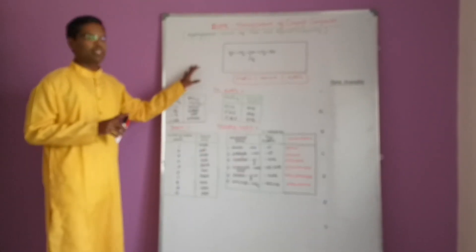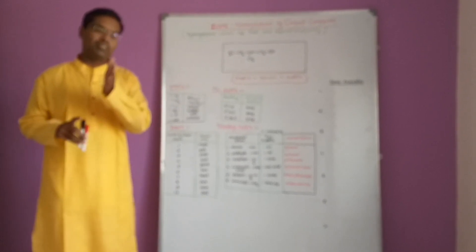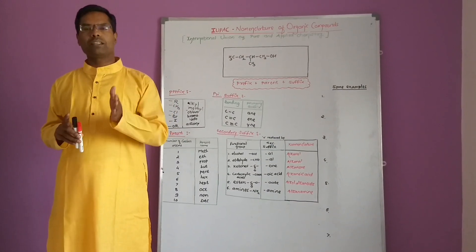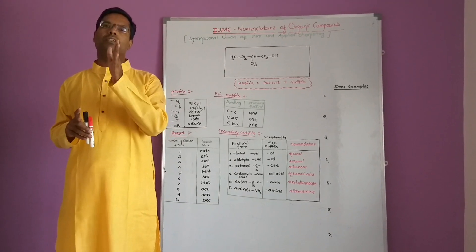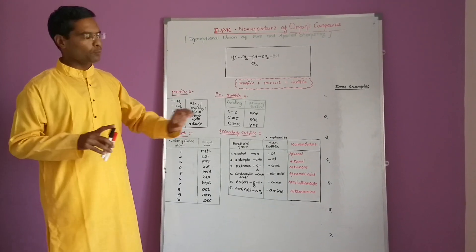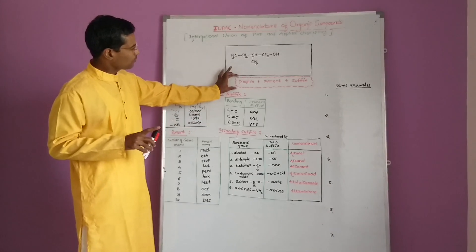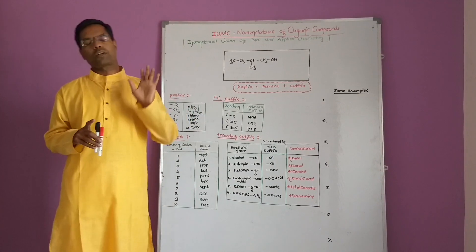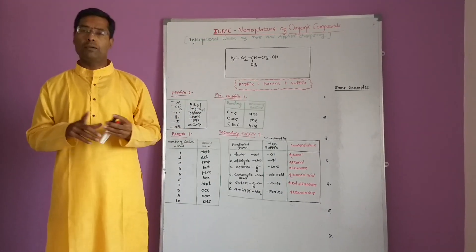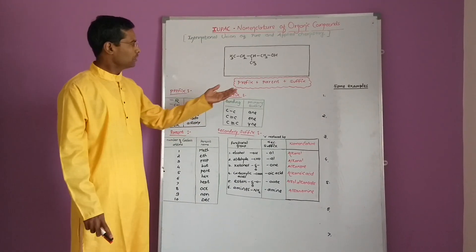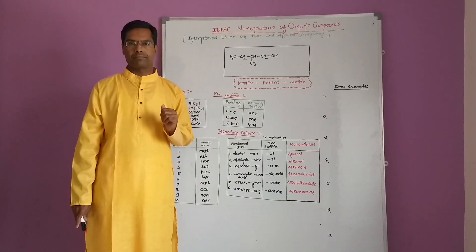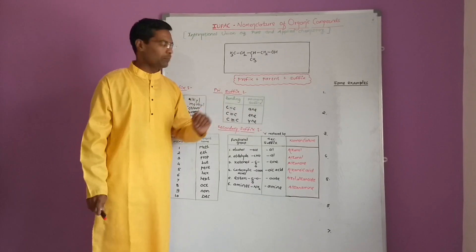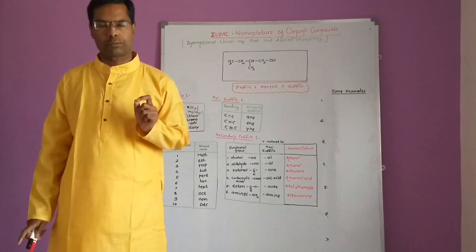To understand the IUPAC nomenclature and the rules for writing the IUPAC name, we have to first take one simple example. The IUPAC name always consists of a prefix, parent, and suffix in the name of an organic compound. Every organic compound has a parent name. It may or may not have a prefix, but the parent name is compulsory, and it also has a suffix.